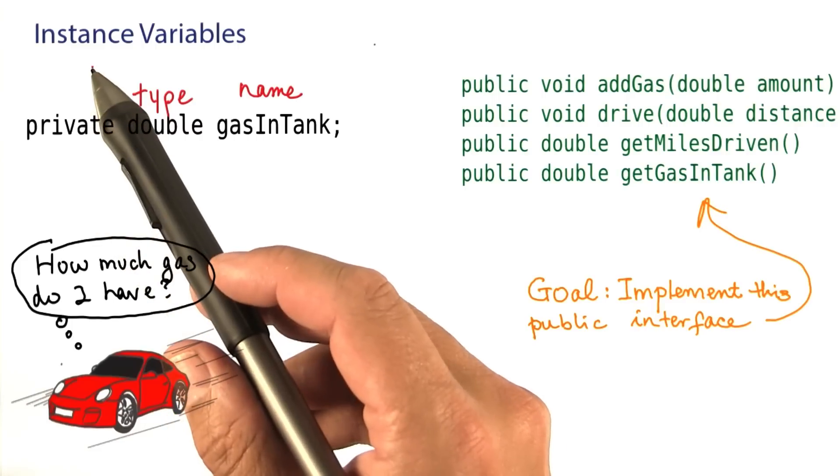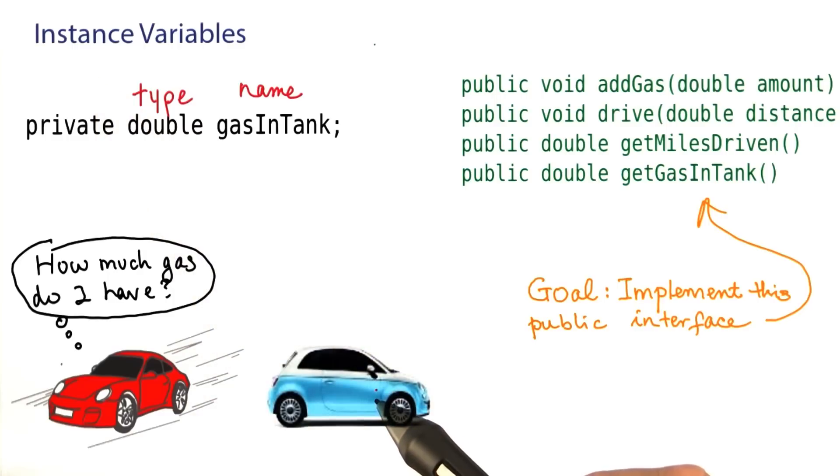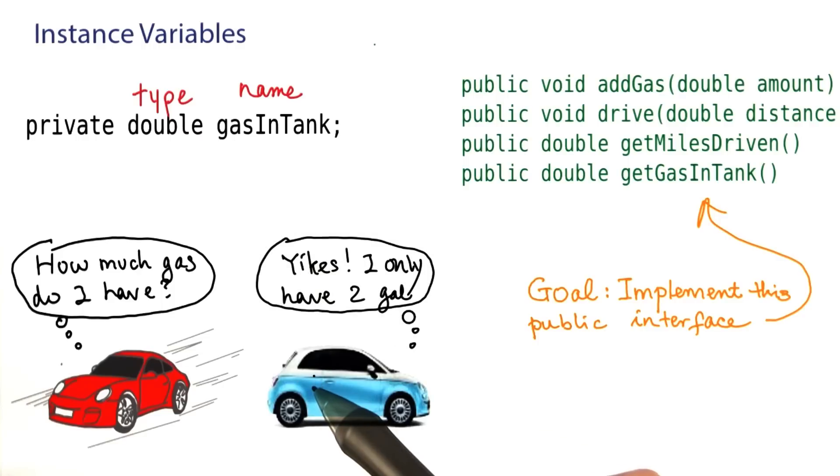Let me tell you why they're called instance variables. Let's have a look at another car object, or as we say, another instance of the car class. Of course, it also needs to remember how much gas it has. And the amount of gas that this object has will be different from the amount of gas of the other object.